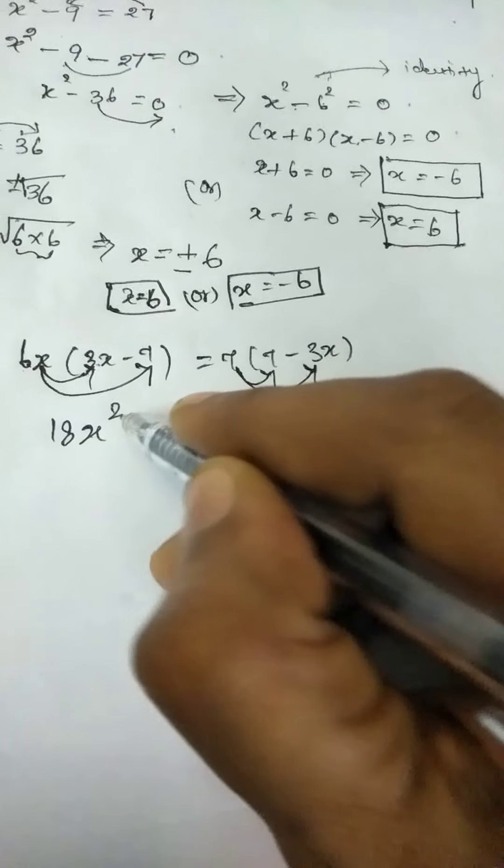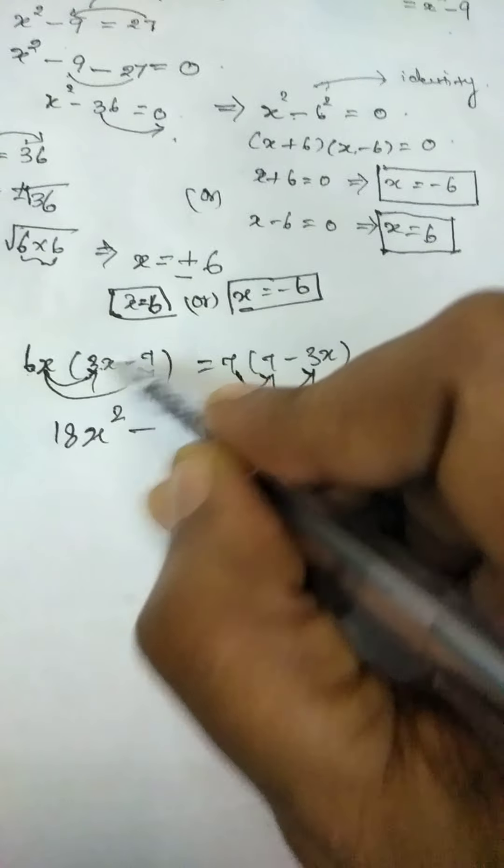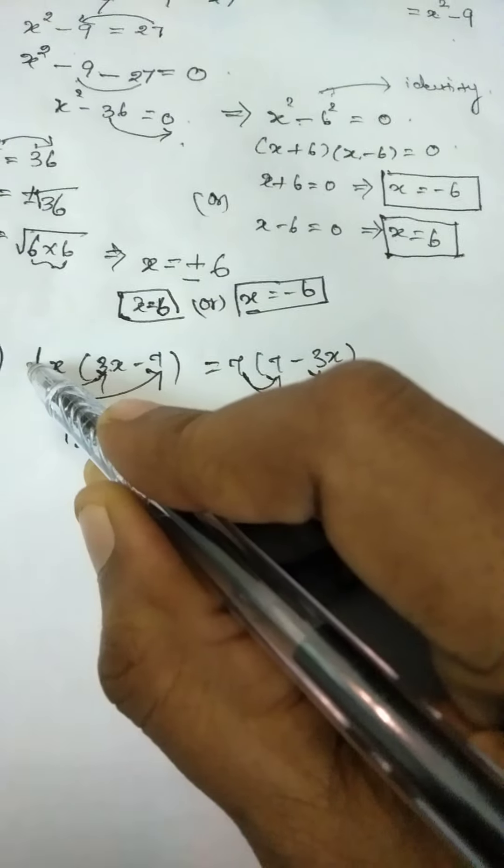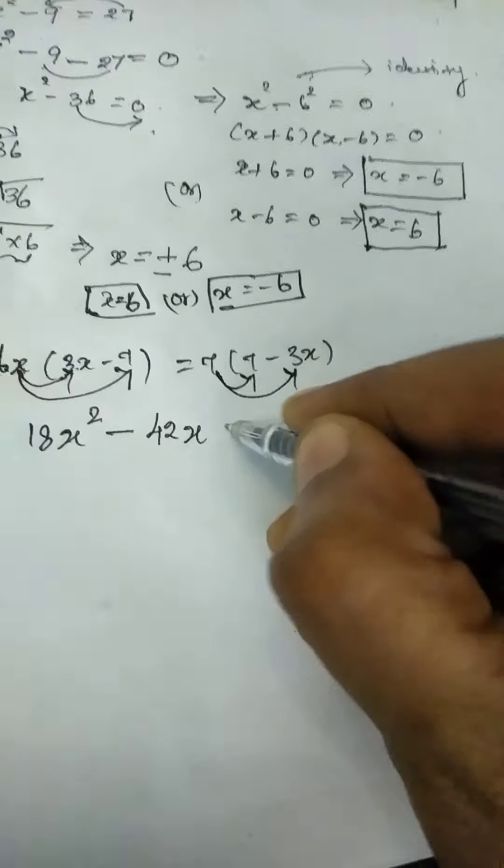So what is the answer? 6 into 3. First you multiply the coefficient number, 6 3s are 18, x into x, x is square minus because here minus and this is positive number.